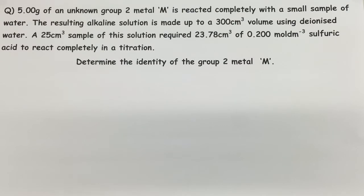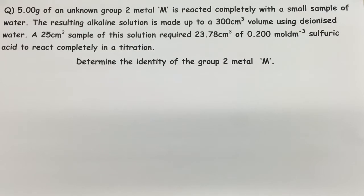So for this one, we can see the question. Effectively, there's a metal being dissolved or reacted with a small amount of water. The solution that results from the metal reacting with water is then made up to a total volume of 300 cm³. A small portion of that solution — 25 cm³ to be exact — is then reacted in a titration with sulfuric acid, and the volume and concentration of sulfuric acid are known.